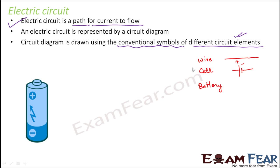How do you represent a battery, and how are a battery and a cell different from each other? A battery is basically like a bigger version of a cell — inside a battery you have multiple cells. A battery is represented as a combination of multiple cells. Both cells and batteries are sources of electric current. Since a battery has more cells, it can provide more current.